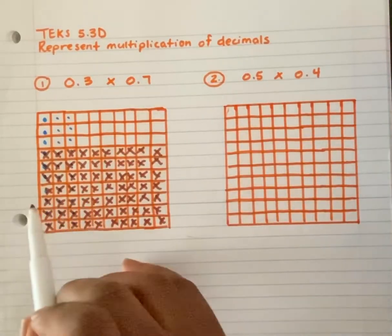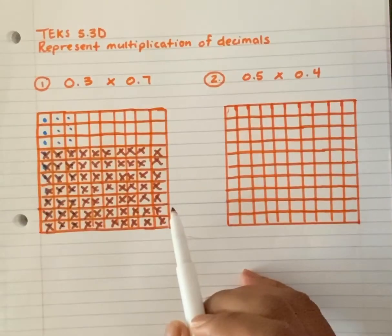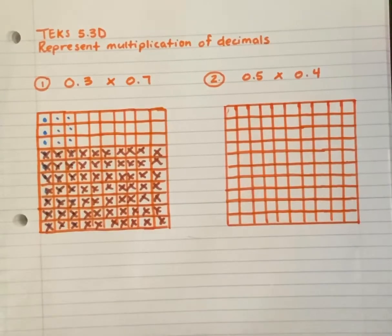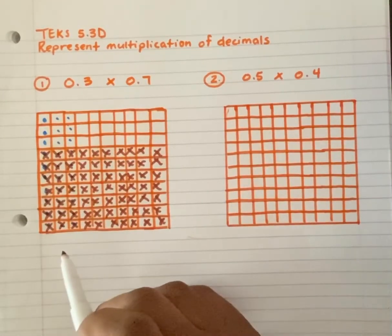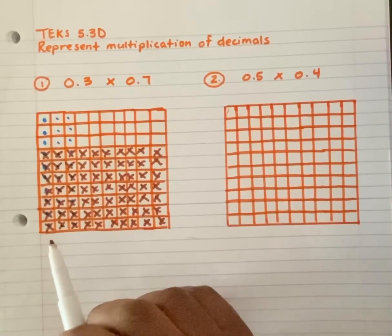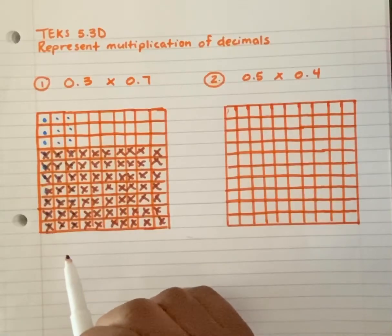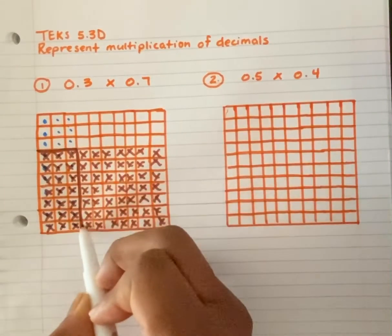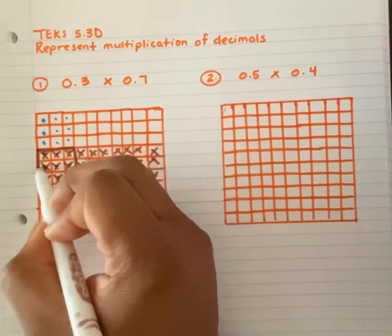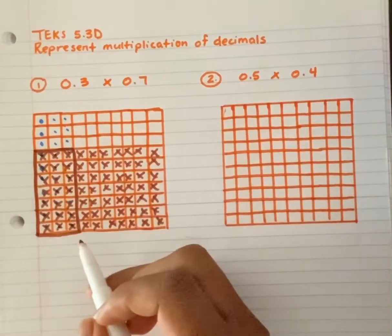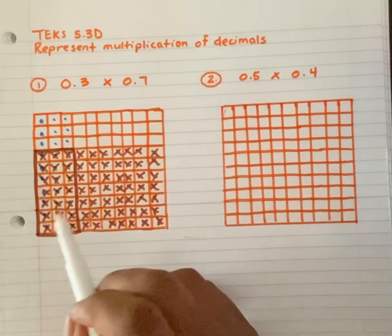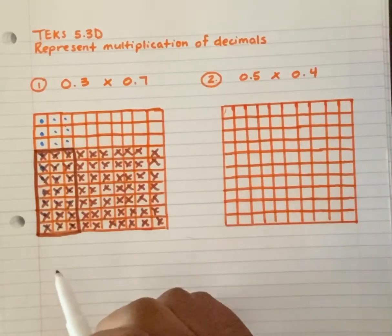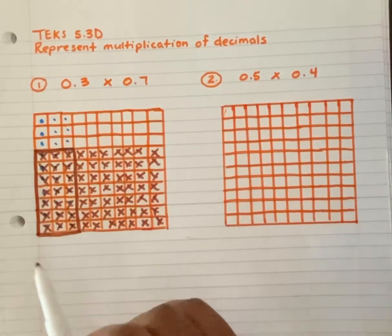You notice I went all the way across. So now my answer is where the two sections intersect or overlap — where I see both dots and X's in the same boxes. This section right here has both circles and X's. This is where it intersects or overlaps, and this is where I find my answer.